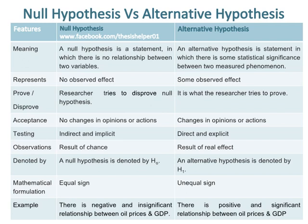The testing of a null hypothesis is indirect and implicit, while the testing of an alternative hypothesis is direct and explicit. The observations of a null hypothesis are based on results of chance, while the observations of an alternative hypothesis are based on results of real effect.